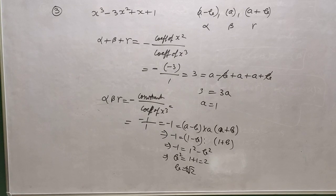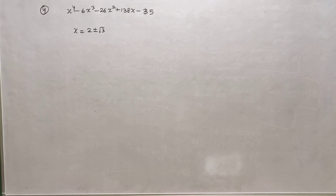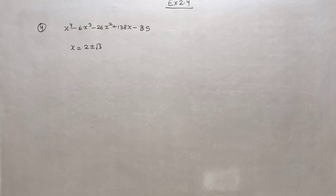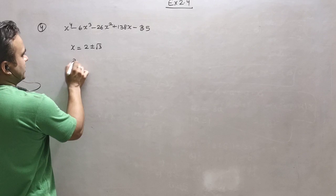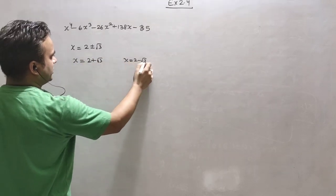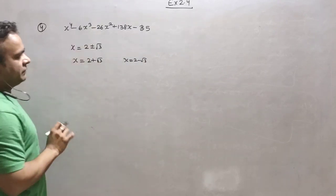Now coming to question number 4. The polynomial is x to the power 4 minus 6x cubed minus 26x squared plus 138x minus 35. This question is similar to exercise 2.3 question 3. The plus or minus here means x equals 2 plus root 3 and x equals 2 minus root 3 are two given roots. Since two factors are given, we have to find the other two.